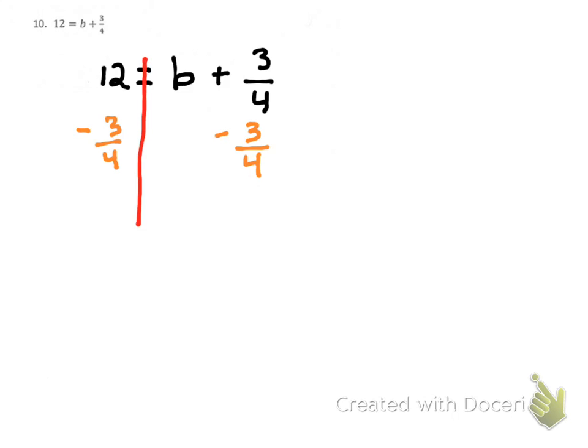To subtract 3 fourths, we have to change 12. We want to make 12 have a denominator of 4. So to do that, we're going to... Let's go over here so you guys can be reminded of how to change a fraction. It's really 12 over 1, and we want it to have a common denominator with 3 over 4.